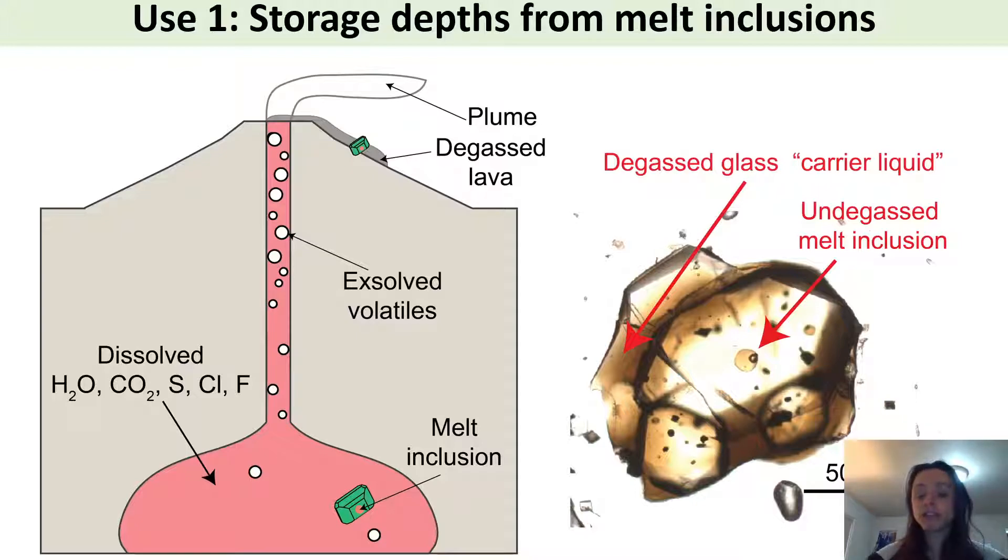So by measuring the concentration of water and CO2 in these pockets of melt we can work out what the concentration was at depth in the magma chamber and then we can use the strong relationship between their solubility and pressure to work out the pressure at which that chamber was set and then we can backtrack that out to a depth using a crustal density profile.